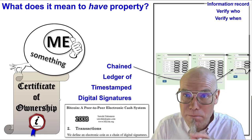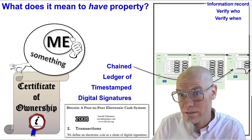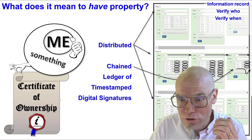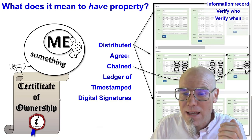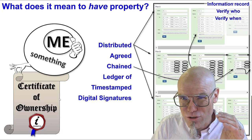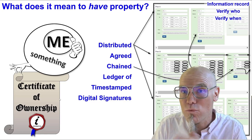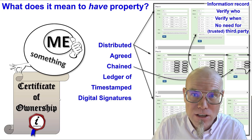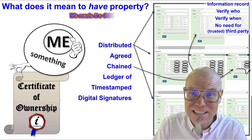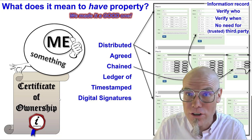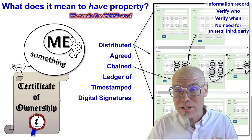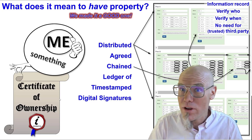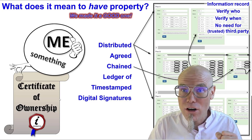The innovation with Bitcoin as the first application of the blockchain was that they proposed to do it in a distributed manner. There is a consensus algorithm that agrees on what goes onto the blockchain, and therefore there is no need for a trusted third party.